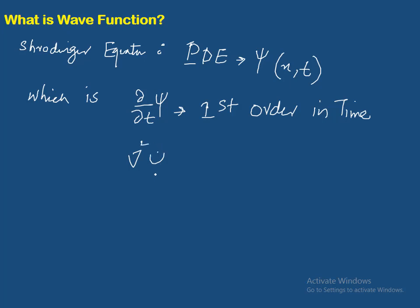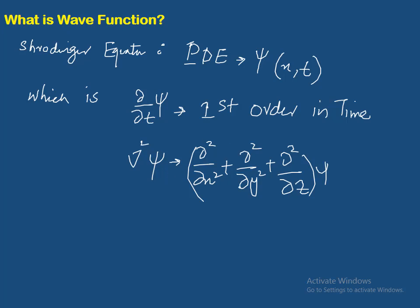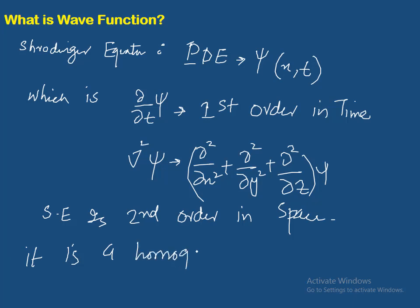Jabke, kyunki Laplacian operator psi ke saath operate ho raha hai — Laplacian operator kya cheez hai: partial-squared by partial x-squared, agar y aur z axis bhi ho to bhi — to psi ke liye space ke derivatives sab second-order hain. So Schrödinger equation is second order in space. Schrödinger equation homogeneous hai. Aur ye ek non-relativistic wave equation hai — Schrödinger equation mein koi relativistic effects nahi hain. Ye iske drawbacks mein se ek hai, jise aap higher classes jaise quantum field theory, M.Phil ya PhD mein padhenge.